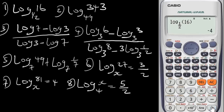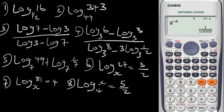We have log 16 as our first input. For the anti-log, press Shift then this log button. The anti-log is the log inverse. Input minus 4 — so this is the anti-log. If you want to put it in standard form, press the SD button. That's it for that problem.